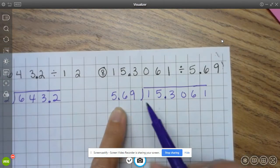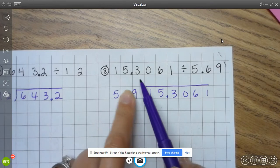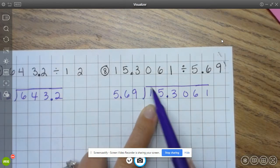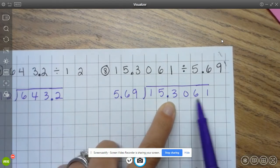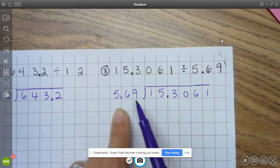Okay, so number eight, I've set up the problem already. First number goes in the wormhouse. 15 and 3, 0, 6, 1, 10, 100,000, 10,000, divided by 5 and 69 hundredths.